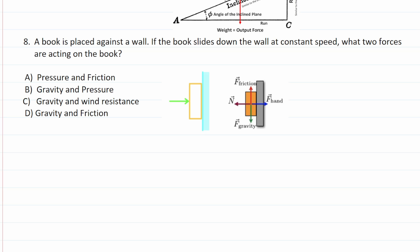Number eight says a book is placed against a wall. If the book slides down the wall at a constant speed, what two forces are acting on the book? So again, we're talking about the book moving vertically and the two forces we have to be aware of are friction. Again, the book is going to be rubbing against the surface of the wall, which is friction as well as gravity. So this one is D, friction and gravity.